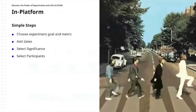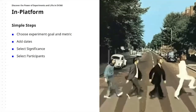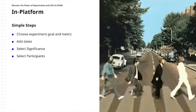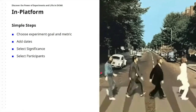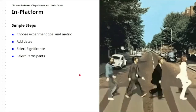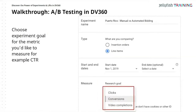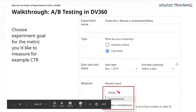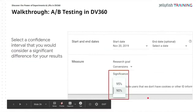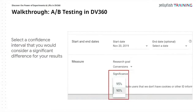You can choose your goal and metric in the platform, add dates, select significance, and choose participants — which campaigns and line items. When setting up in the DSP, the trader selects the goals: they put the name of the experiment, choose what they're comparing — insertion orders or line items — and the start dates, which would have been decided when designing the experiment. Then they measure the research goal: is it clicks, conversions, or video completions?